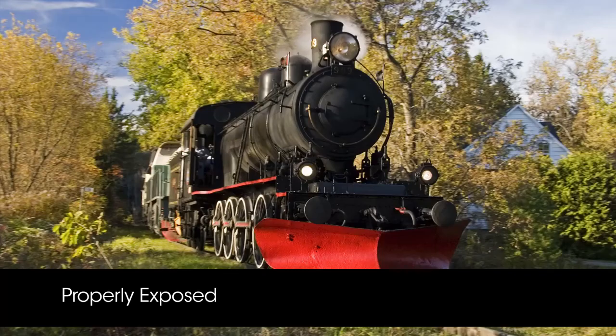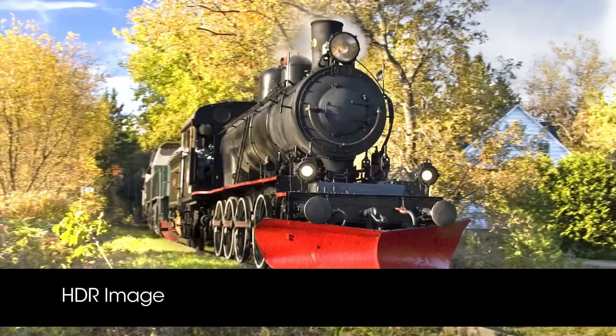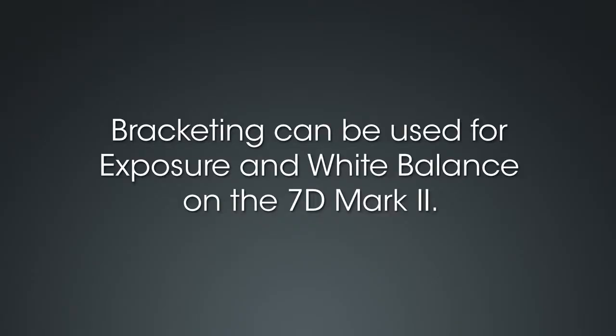Bracketing is a technique that allows photographers to take several versions of the same photo but with different settings. When exposure is bracketed using three images, one of the photos will be properly exposed, one will be slightly overexposed, and one will be slightly underexposed. Then, you'll have the ability to choose the best image of the three or use photo editing software to combine the three shots, giving the image a broad range of highlights and shadows that are all properly exposed. This technique is often called HDR or High Dynamic Range. Professional photographers have used bracketing since the days of film to ensure good exposure on important shots. With the 7D Mark II, bracketing is available for exposure and white balance.